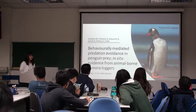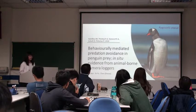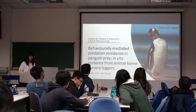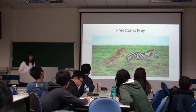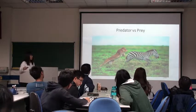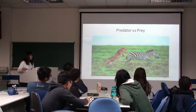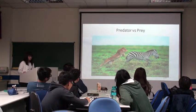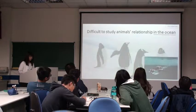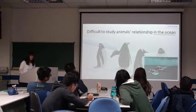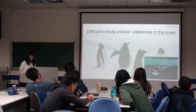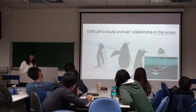Today, we will talk about the relationship between predator and prey. And as you can see in this picture, the lion is a predator and the zebra is the prey. And we face many difficulties while studying about the relationship between predator and prey in the ocean.